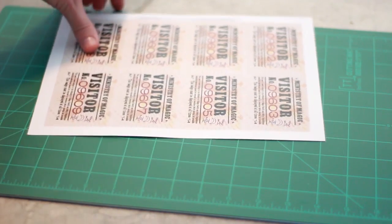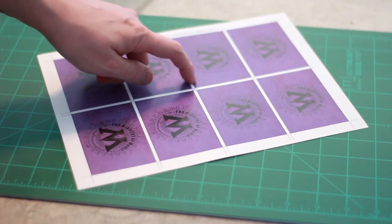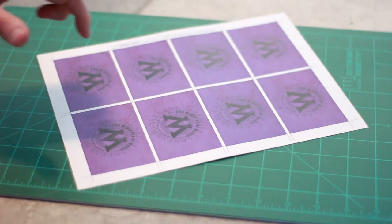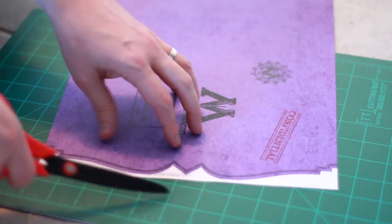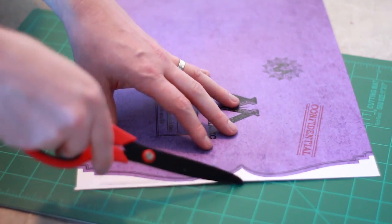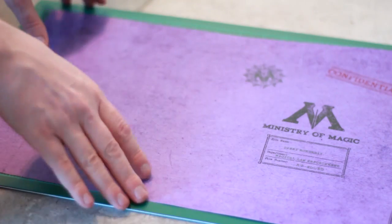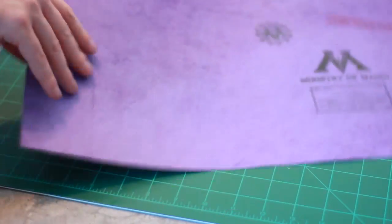When you get to these visitor badges, you want to cut off from this side, so you cut all of this white space off from in between each one of these. Now once we get to this point, you can cut this part off with just some scissors.